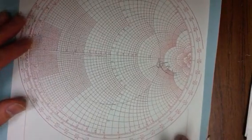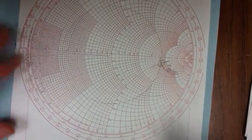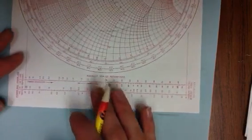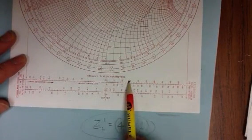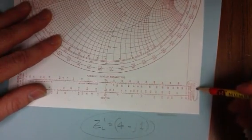But, what I really want to do is find the reflection coefficient. So what I'm going to do is go down to the bottom, where it says radially scaled parameters, and I look here.